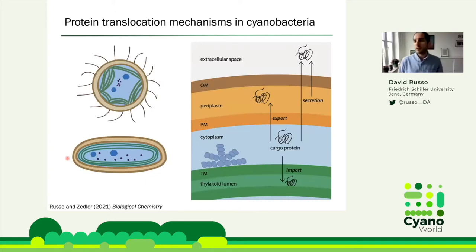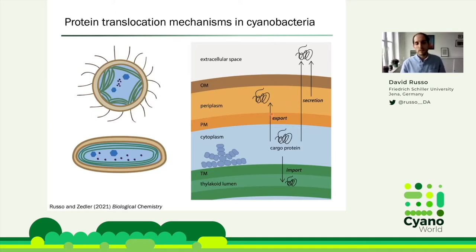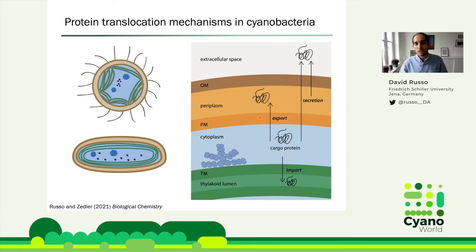The next couple of slides introduce the fundamentals of protein translocation and secretion in cyanobacteria. If you think of the cyanobacterial cell as a gram-negative bacterium, the outside is very similar: we have the plasma membrane, the outer membrane, and the periplasm in between. In bacteria, export is defined as crossing the plasma membrane, and secretion is crossing the outer membrane. Cyanobacteria are special because they also have thylakoid membranes, which we can call import, and the machinery for both export and import — the twin-arginine translocation machinery — is actually identical.